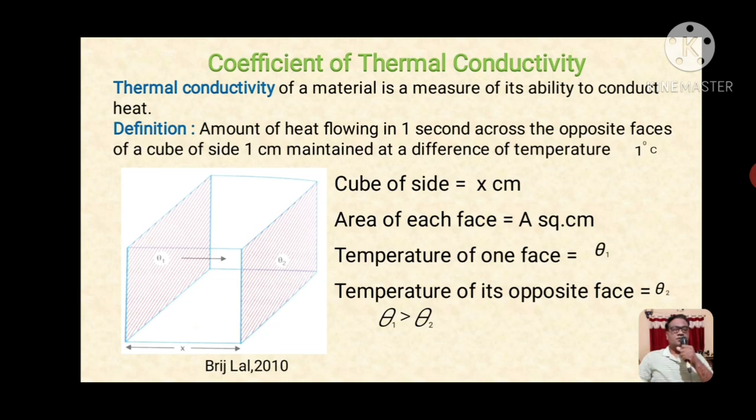Here in this figure, you can see a cube. Two faces are shown by shaded portions—one face has temperature theta 1 and the opposite face has temperature theta 2. The arrow shows the direction of heat conduction. x is the distance between these two faces. Here temperature theta 1 is greater than theta 2, so heat will flow from the higher temperature to the lower temperature.